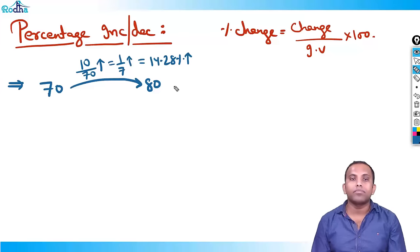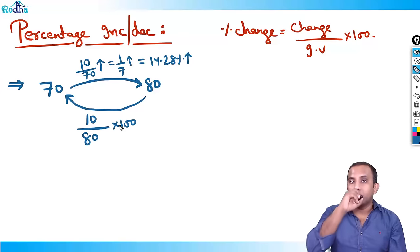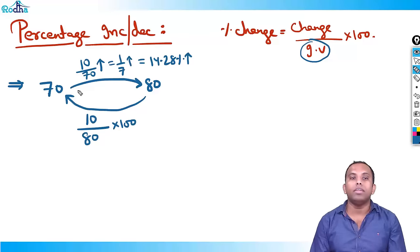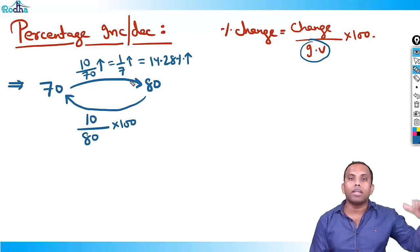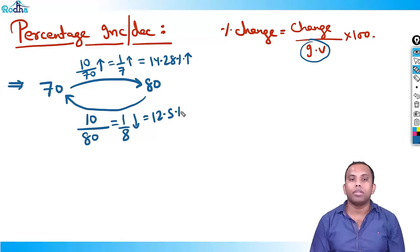Now 80 to 70 — what is the percentage change? Again, change upon initial value. Change is 10 upon 80, because the initial value has now changed to 80. 10/80 is 1/8 — that is 1/8 decrease, which is 12.5% decrease.